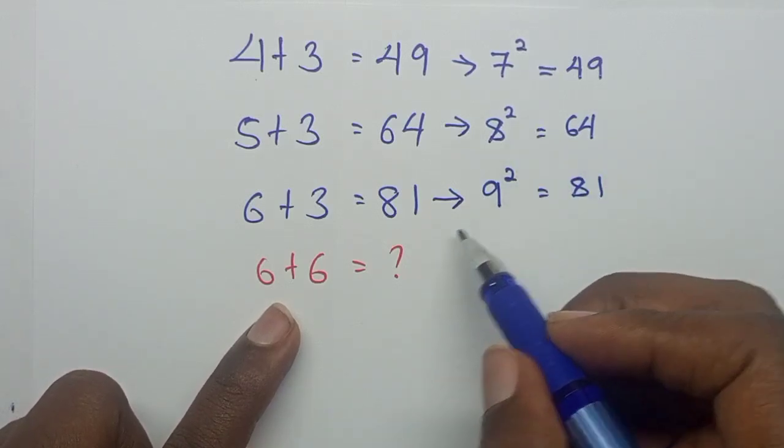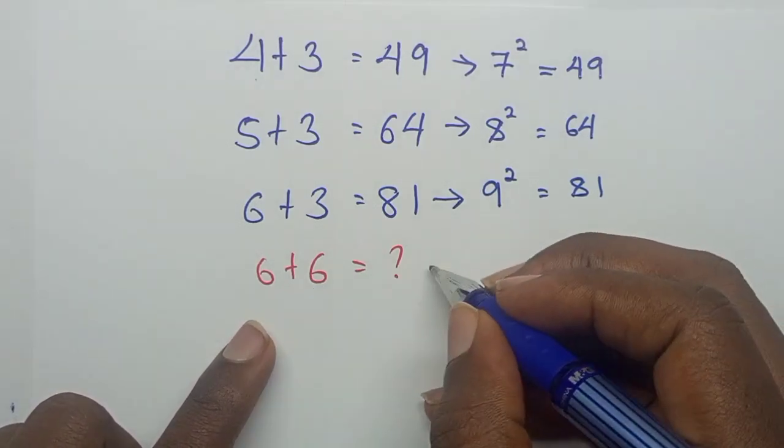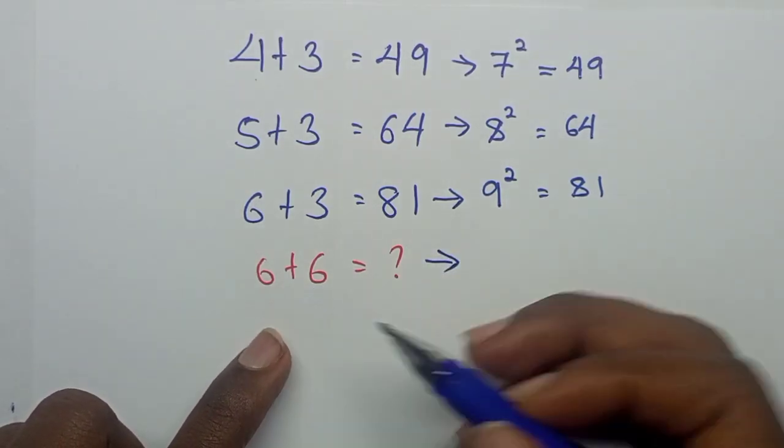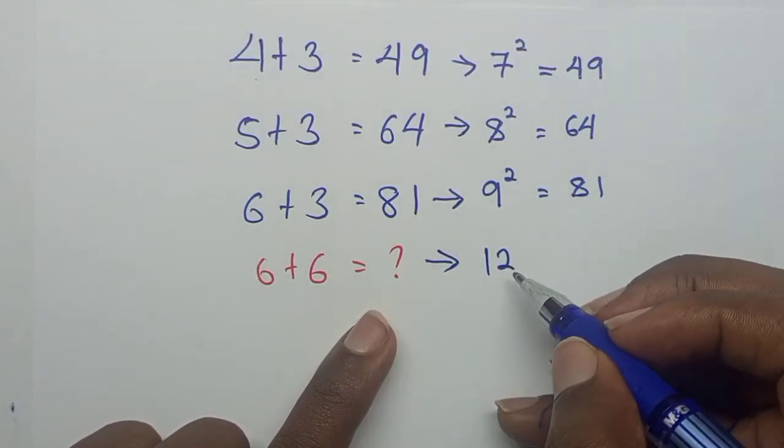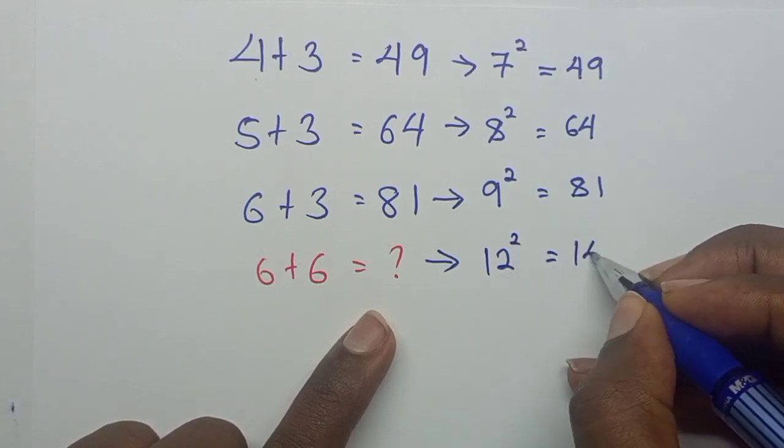That means if we follow this same pattern, we can find the value of 6 plus 6. So that means 6 plus 6 is 12. So to find its value, we have to square this 12, which gives us 144.